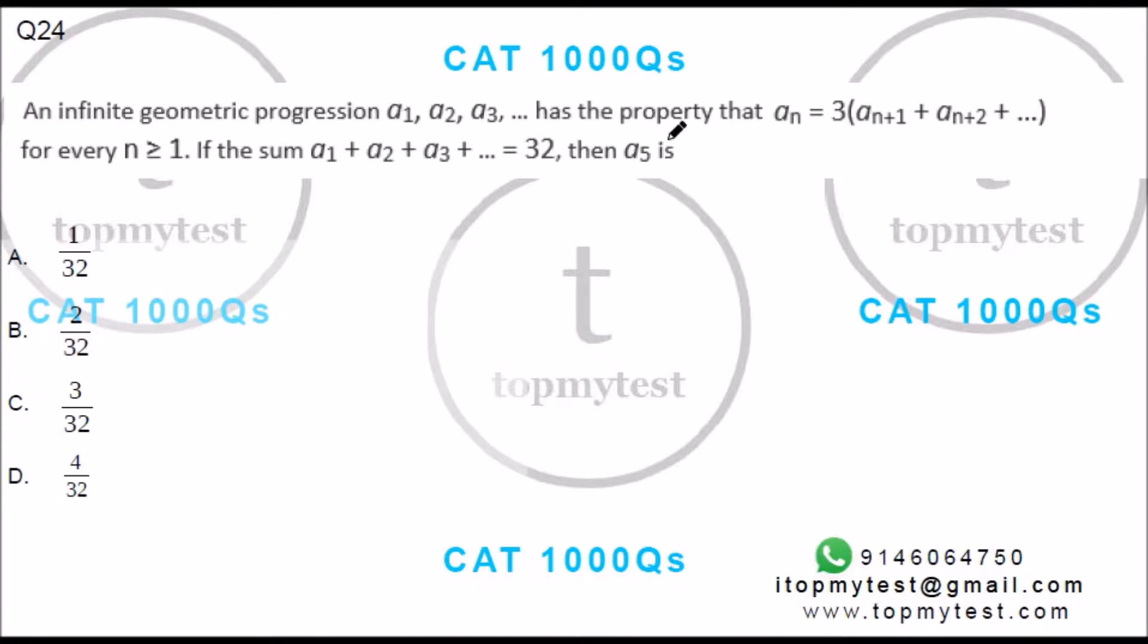This is a question on progressions that came up in CAT 2017. An infinite geometric progression a1, a2, a3,... has the property that an = 3(an+1 + an+2 + ...) for n ≥ 1.